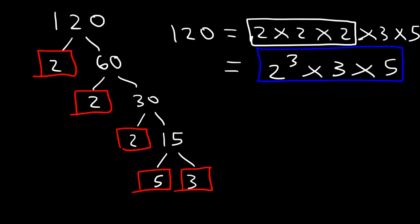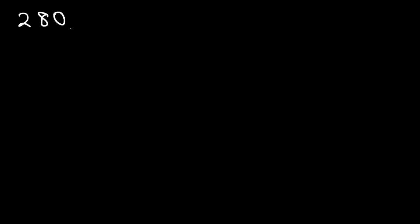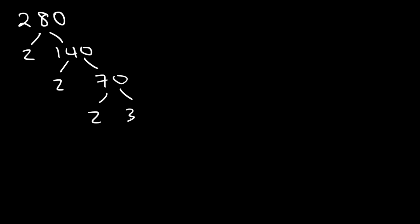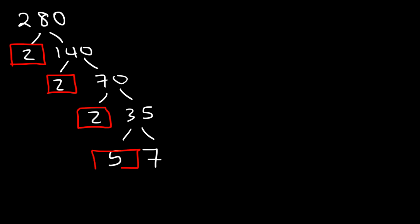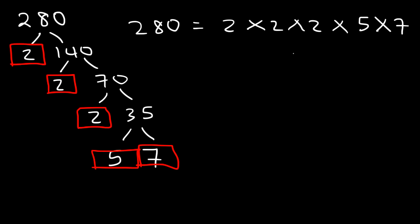Now let's write the prime factorization of 280. Two-eighty divided by 2 is 140; divided by 2 again is 70; divided by 2 again is 35. Thirty-five ends in 5, so it's divisible by 5: 35 divided by 5 is 7. So 280 is 2 times 2 times 2 times 2 times 5 times 7, which using exponents is 2 to the fourth power times 5 times 7.